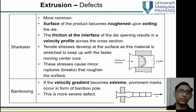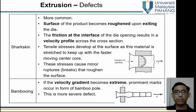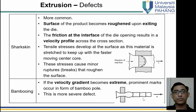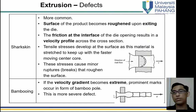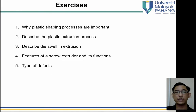Bambooing occurs when the velocity gradient becomes extreme — prominent marks occur in the form of bamboo-like segments. This is a more severe defect. When the product exits, it has partitioned sections like bamboo segments, caused by a high velocity gradient — alternating fast and slow flow — while the extrusion continues.